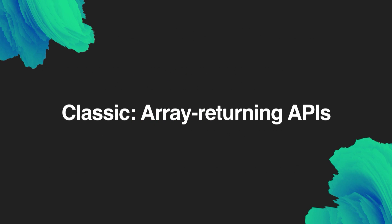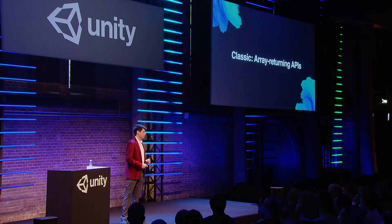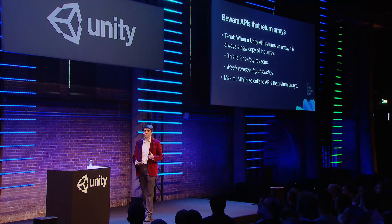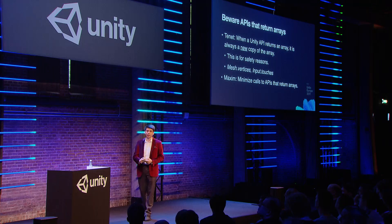Let's talk about a classic one next: APIs that return arrays. Any time you access a Unity API or property that returns an array, it's going to allocate a fresh copy of that array every single time you access it. This is primarily for safety reasons — if one system modifies an array for its own use, we don't want some other system elsewhere to get an incorrect view of Unity's internal state. Canonical examples: mesh.vertices will give you a fresh copy of the mesh's vertices; Input.touches gives you an array containing all current touches.